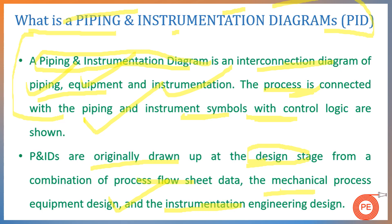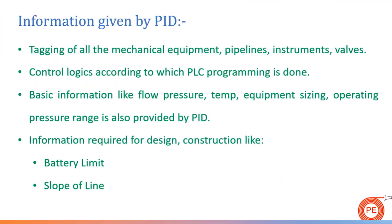Moving on — what is the information given in a P&ID? A P&ID is a very critical and crucial document. It contains information that is required and useful at almost every stage of the plant, whether project management or construction engineering. Even after the plant is handed over to operations, the operations or maintenance team uses these P&IDs to understand the process. The first information shown in a P&ID is the tagging of all the mechanical equipment — pipelines, instrumentation, valves, etc.